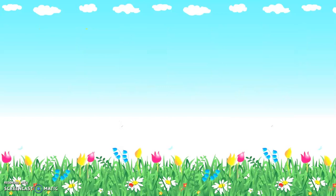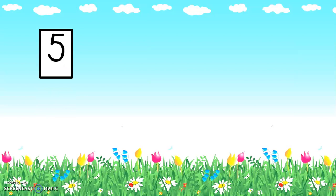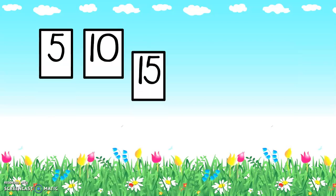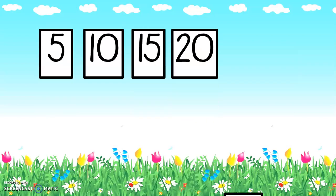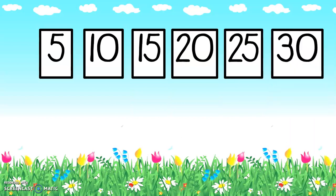Let's have a look at our next number pattern. Count with me: five, ten, fifteen, twenty, twenty-five, thirty. Can you, without me telling you, guess what the number pattern is? What are we counting in? Yes, we are counting in fives. We are adding five each time. So five, ten — I had to add five to get to ten.